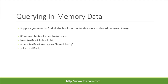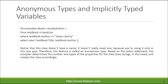Suppose you want to find all the books in the list that were authored by Jesse Liberty. Notice that this class doesn't have a name — it doesn't really need one, because you're using it only in this one spot. Therefore, this feature is called an anonymous type.